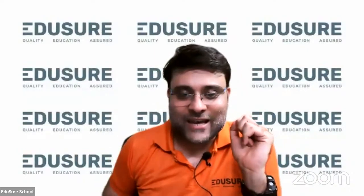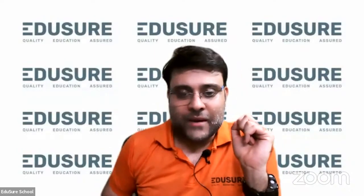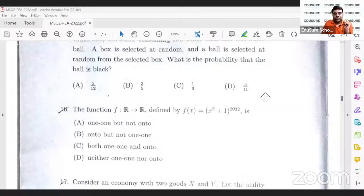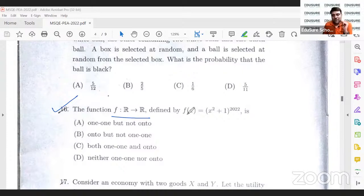Let's go into the ISI 2022 PA question number 16. The question is on your screen. What is the question? The function F going from R to R defined by F(x) equals x square plus 1 to the power 2022.